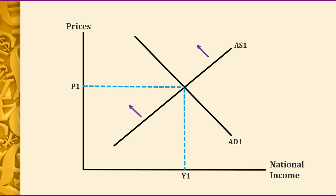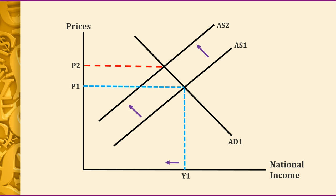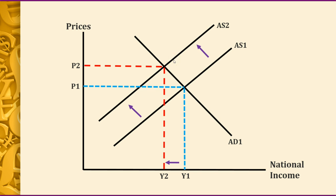Going back to our supply and demand graph: supply is going to decrease, so the supply curve shifts to the left because suppliers want to supply less as it's costing them too much. Our equilibrium point moves and the price rises. So we have a price increase caused by changes in supply, which itself was caused by an increase in costs. Remember: two types of inflation — demand inflation where increased demand causes prices to rise due to shortages, and cost inflation where increased production costs affect supply and force prices up.